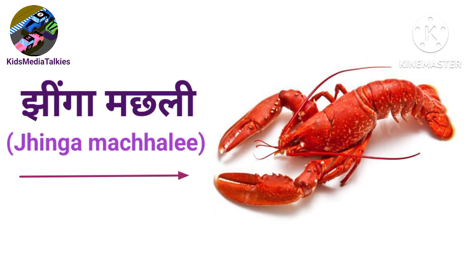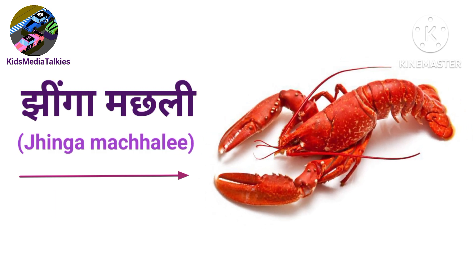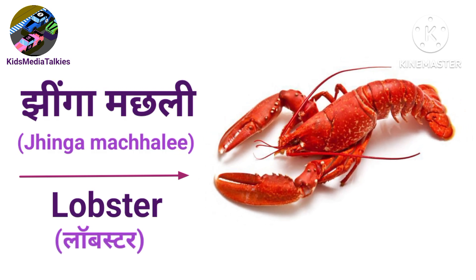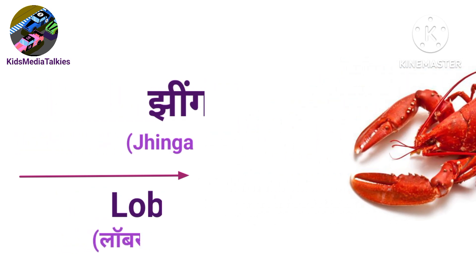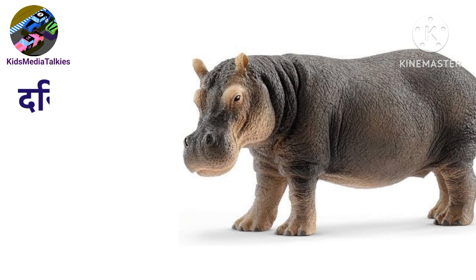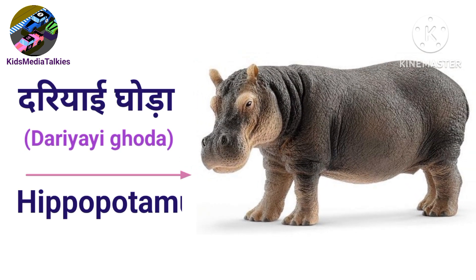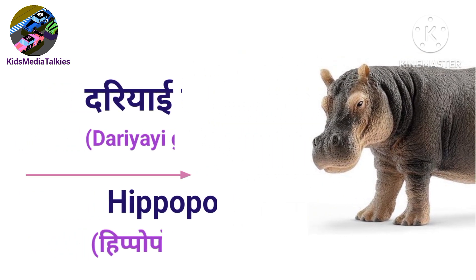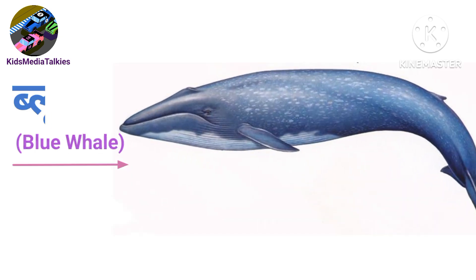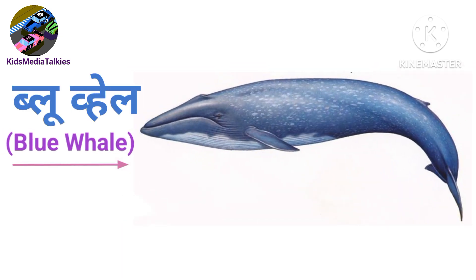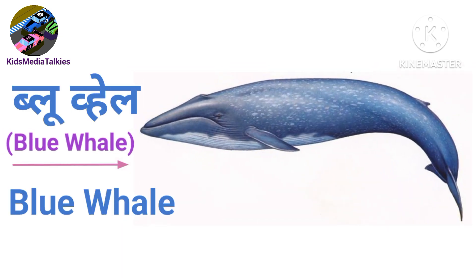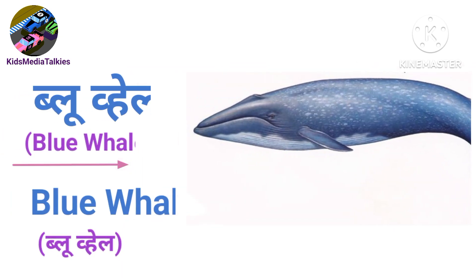Jhinga machli — lobster. Daryai goda — hippopotamus. Blue whale — blue whale.